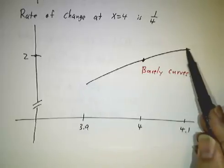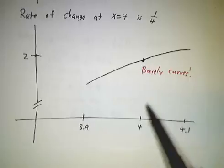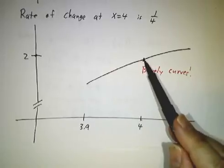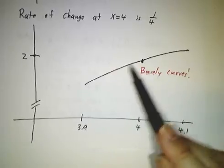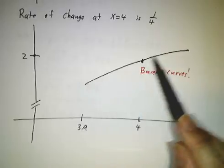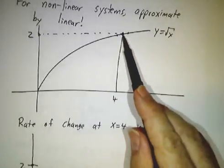And what's the slope of that straight line? Well, it's the rate of change at 4. In other words, it's slope ¼. So we can use a line of slope ¼ to give us a really good approximation to this curve.